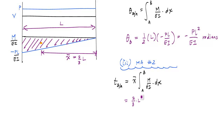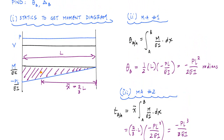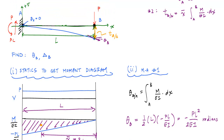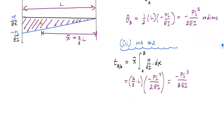So this is two-thirds times L times the area, which we found before. This gives us two-thirds times L times minus PL² over 2EI, which was the area of that triangle. This becomes minus PL³ over 3EI. That negative means point B lies below the tangent line we're referencing. Point B has moved down here — it lies below the tangent line at A, and therefore the tangential deviation is minus PL³ over 3EI. It also happens that the vertical deflection delta B equals minus PL³ over 3EI, indicating it's below the x-axis.